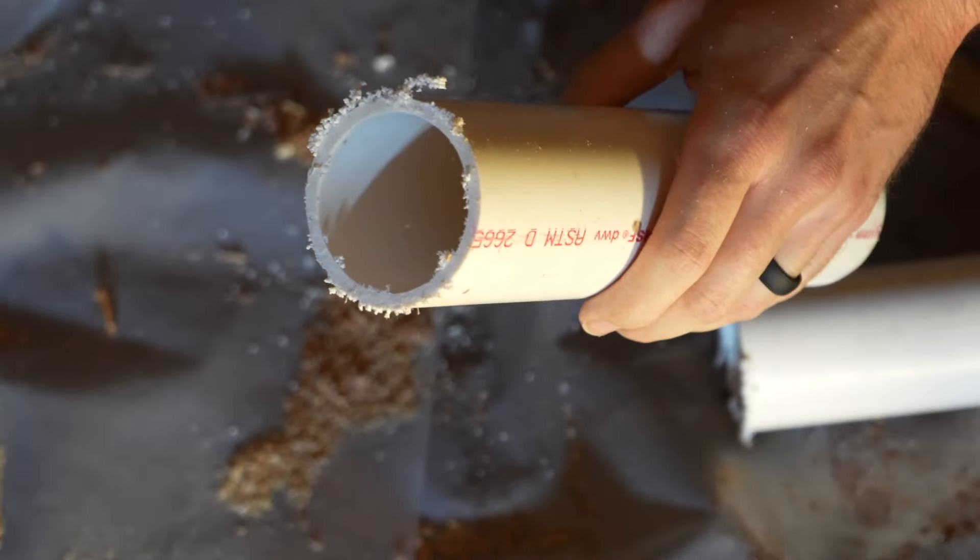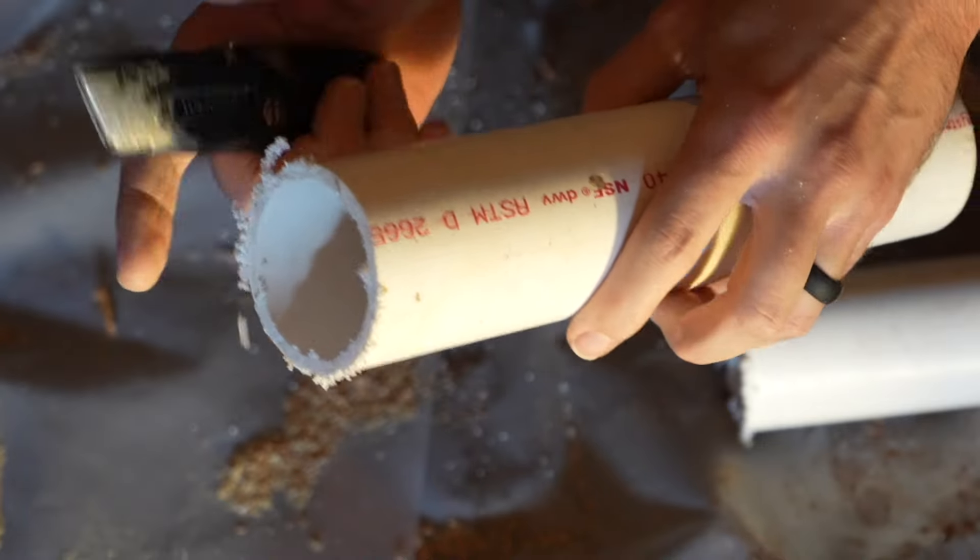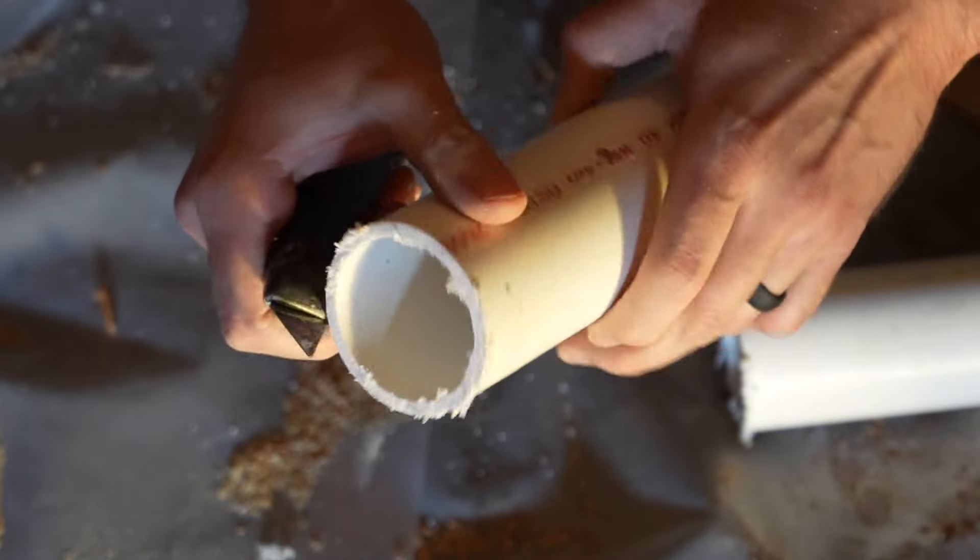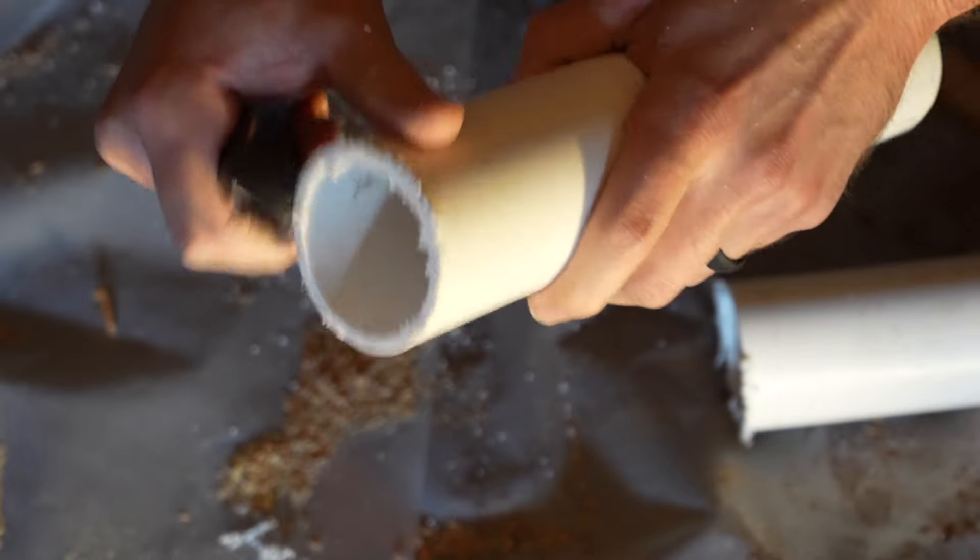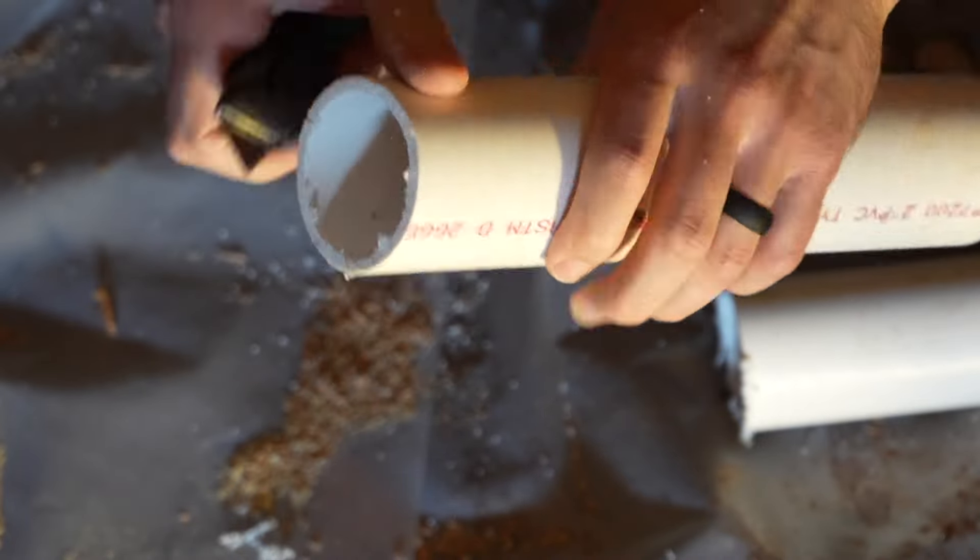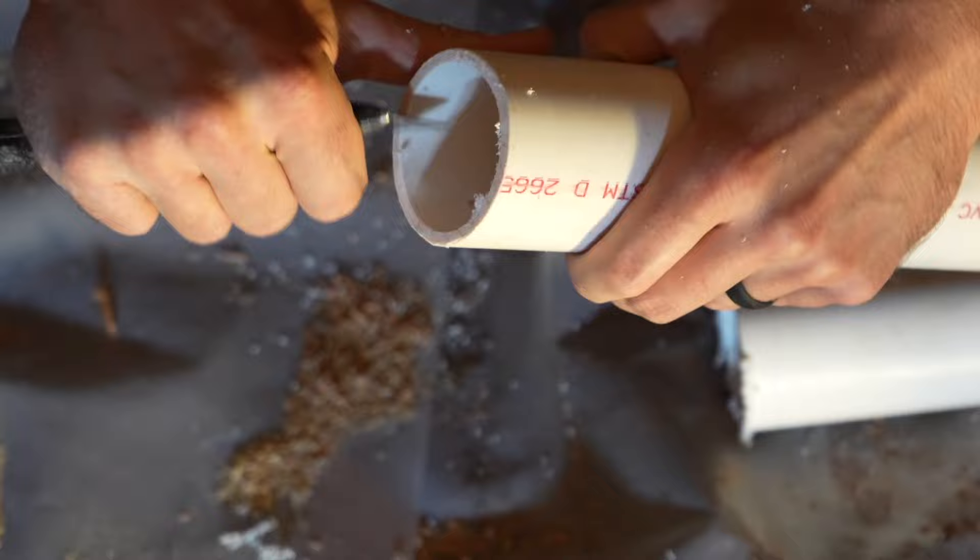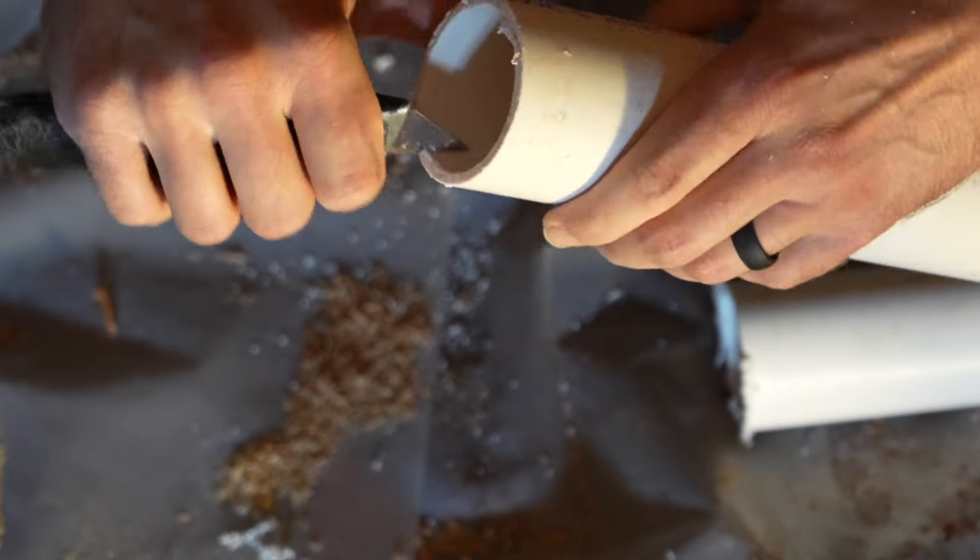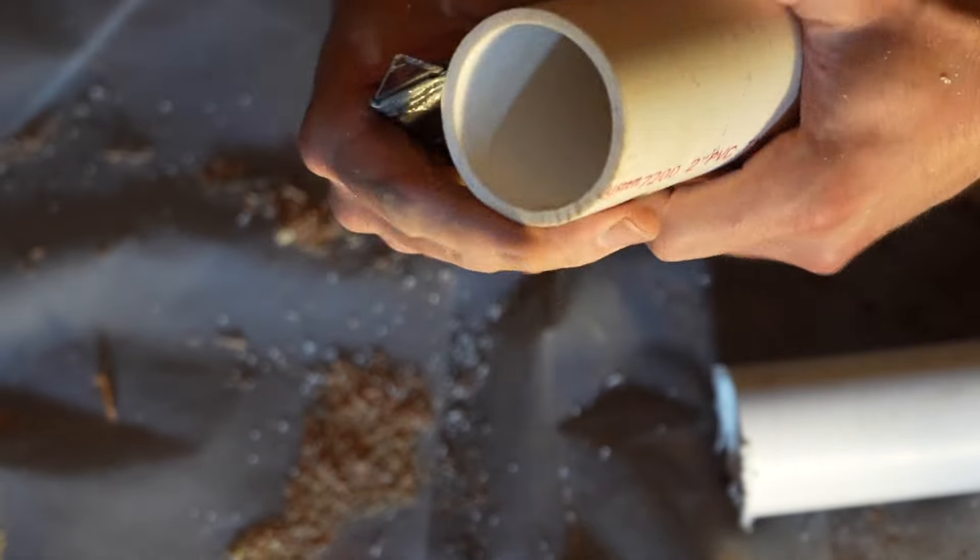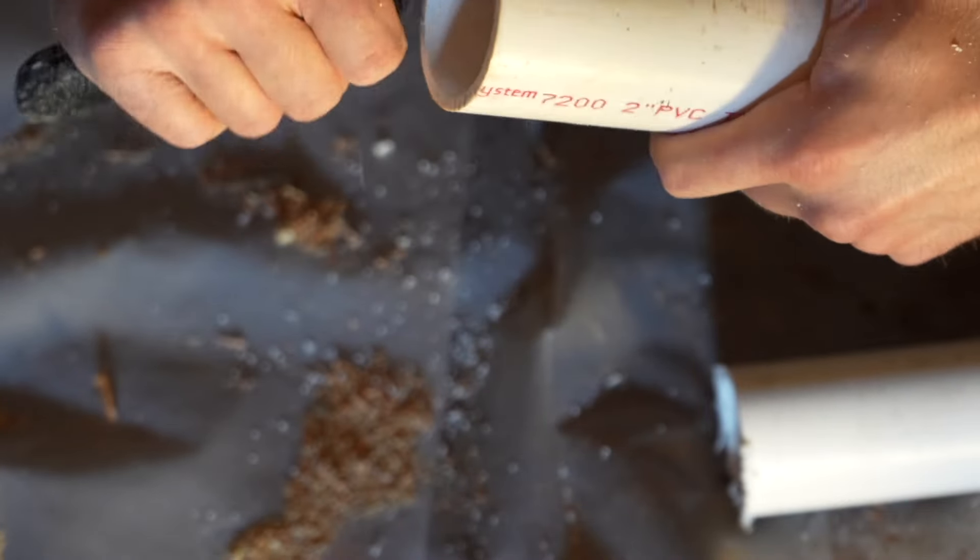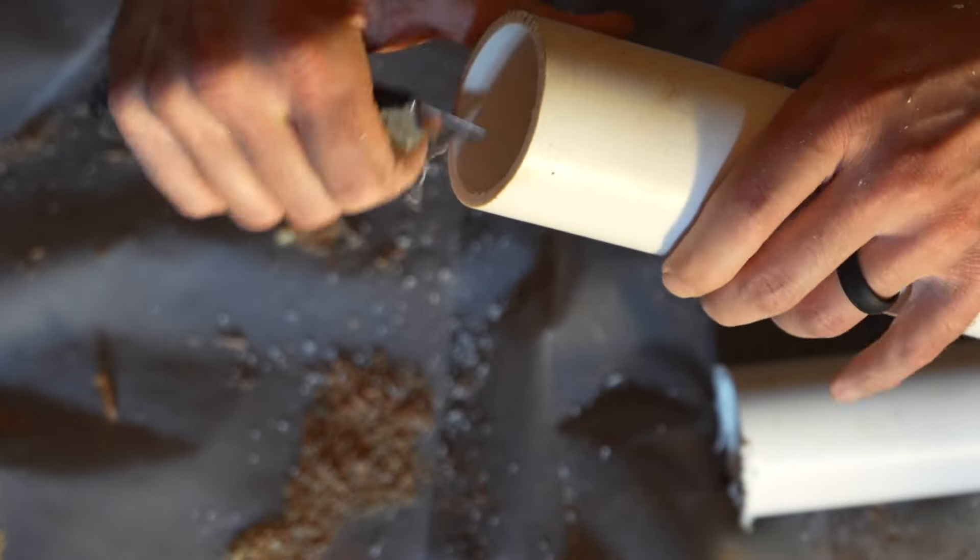As you can see we got all these burrs to remove on this as well. All I got to do is take a utility knife and just scrape along the pipe like so, and also remove the ones on the inside as well. I'll even go to this factory edge and do the same thing just to make sure it's nice and clean.